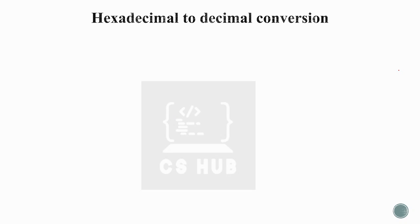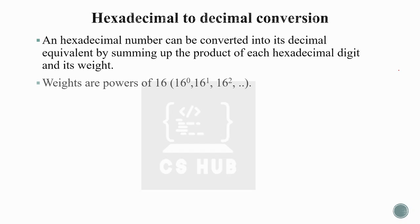Next, converting hexadecimal to decimal. The method is also similar — here the weights are powers of 16 since the base is 16. We can now convert any base number system into decimal by multiplying each digit by its weight, where the weights are powers of that base. For hexadecimal: 16⁰, 16¹, 16², or 16⁻¹, 16⁻² for fractional parts.